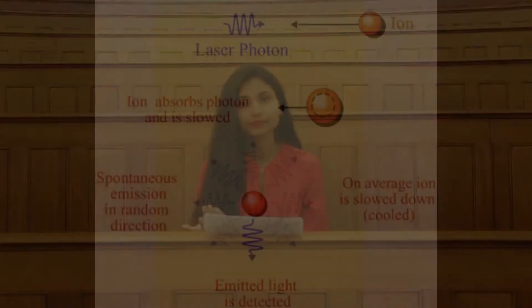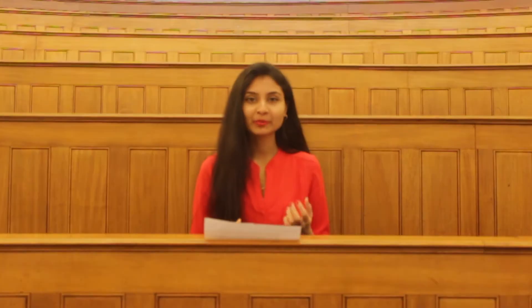To make the atoms colder, we use a technique called laser cooling. We don't realize it in everyday life, but photons actually carry momentum. If the collision between atoms and photons can be used to slow the atoms down — the momentum of the atom is significantly larger than that of a single photon — therefore, several photons need to be absorbed by the atom and then re-emitted in order for the atom to be slowed down.